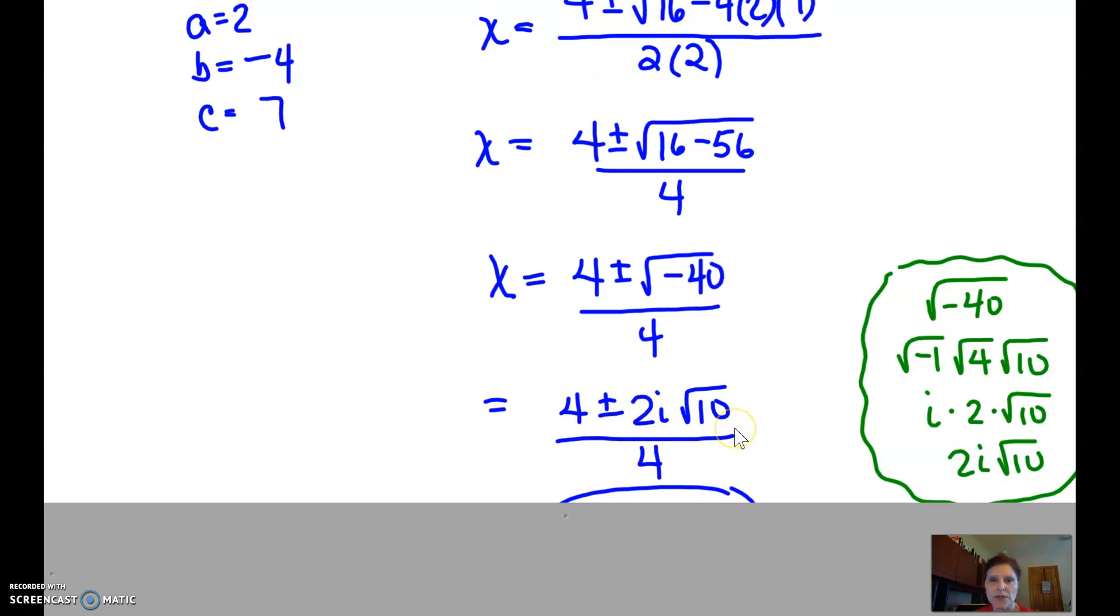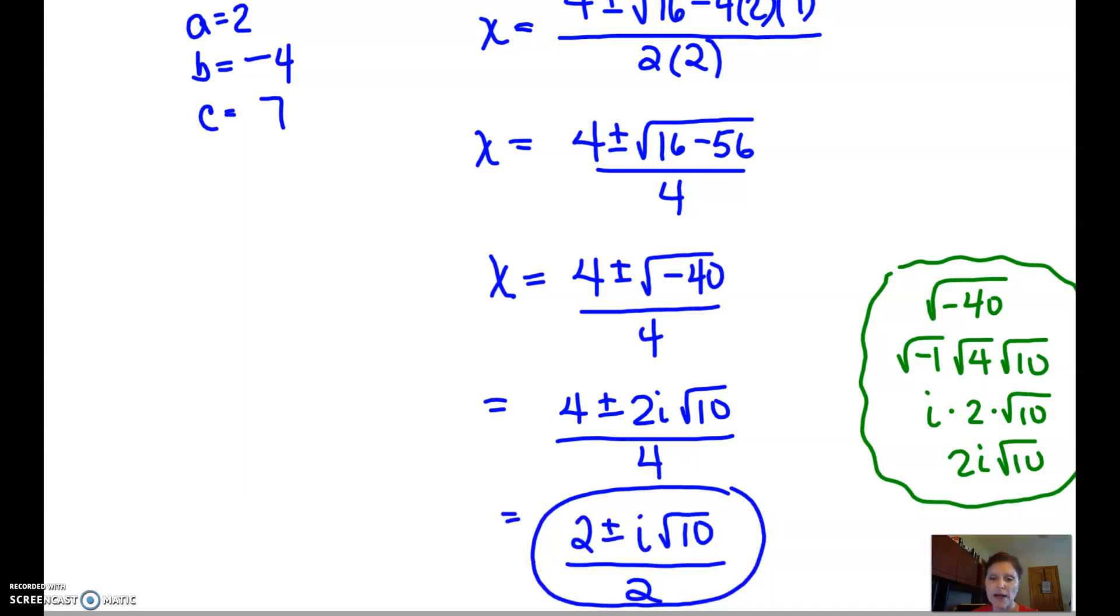Now that we have that square root simplified, we can look at all three chunks that we have here and say, is there anything that we can reduce from all three of them? Sure, they're all divisible by 2. Remember, we're going to ignore the square root part. It's just the outside numbers. So I'm going to pull that out and reduce it down to 2 plus or minus i square root 10 over 2.